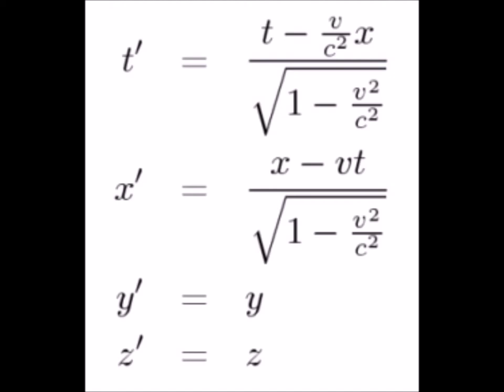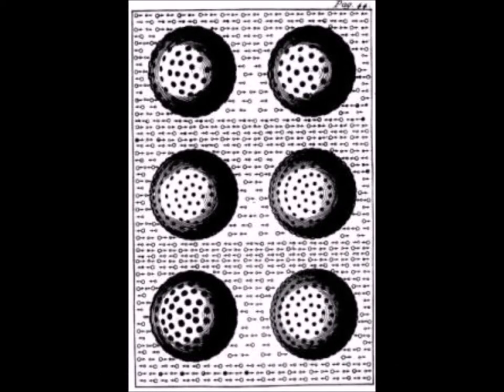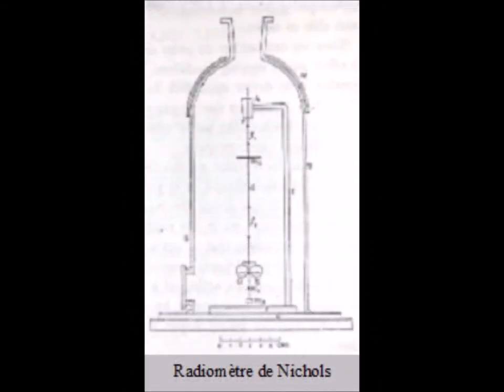Lorentz attempted to use theory of Lesage to explain the gravitational attraction of two electrons and thus explain gravitation. He then tried to use Maxwell-Bartoli's wave pressure. He failed in both cases.